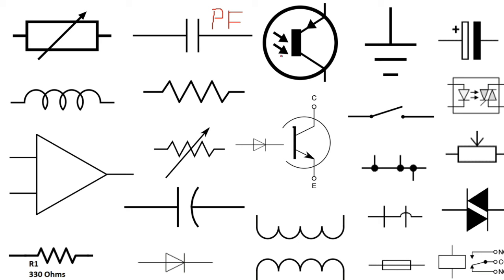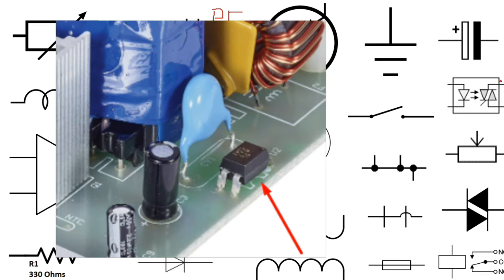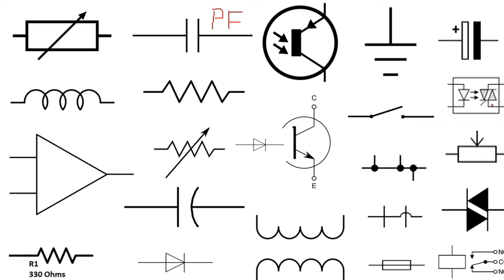We have here the varicap. We can use this transistor in place of this varicap. This is an opto-isolator or optocoupler that we find in the SMPS, the switch mode power supply. Here, this is the symbol of ground. This is analog ground. For the ground, there are many types: analog ground, digital ground, and chassis ground. We always find chassis ground in cars and automobiles.